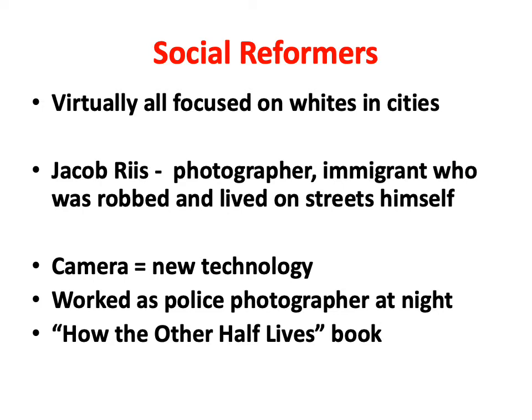Social reformers, both in the Gilded Age and later during the Progressive Era — 1900 to U.S. entry in World War I — almost all focused on whites living in cities. They had a blind spot, almost all of them, to Blacks and the terrible condition of Blacks in the United States: the racism and segregation in the South. That was almost pushed to the side, nor did they focus on the plight of the Native Americans — the American Indians. So the focus was on whites in the cities, with a bit on farmers, but mainly whites.